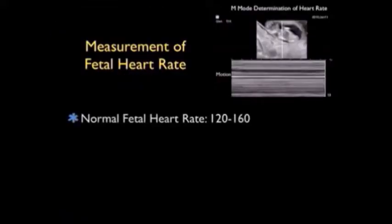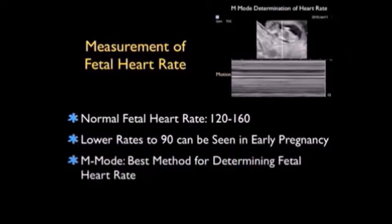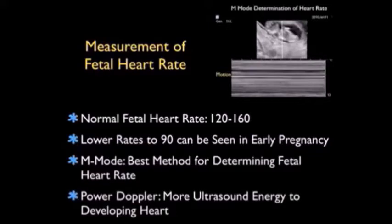In addition to measuring the gestational age of the fetus, another very important concept is to get a measurement of the fetal heart rate. Normal fetal heart rates will range from 120 to 160 beats per minute, but lower rates down to 90 beats per minute can be seen in early pregnancy in the early parts of the first trimester. M-mode is the best method for determining fetal heart rate. Power Doppler, in contrast, gives more ultrasonic energy to the developing heart. Thus, M-mode is the preferred way of measuring the fetal heart rate.